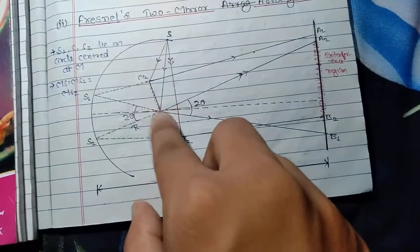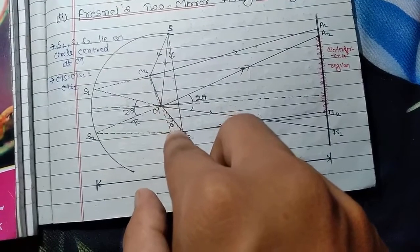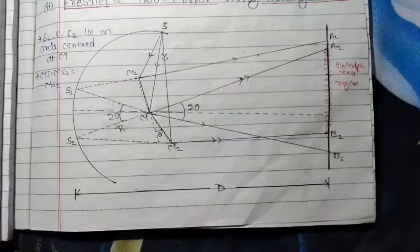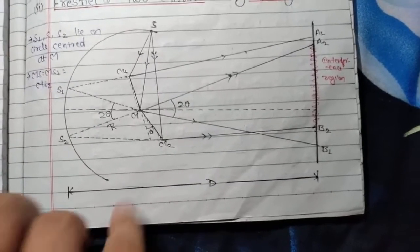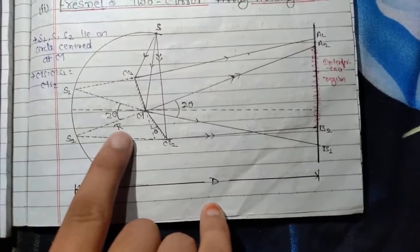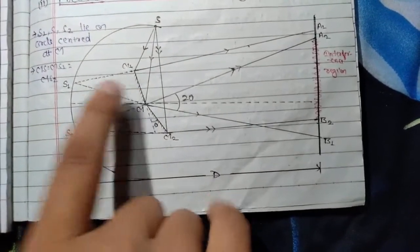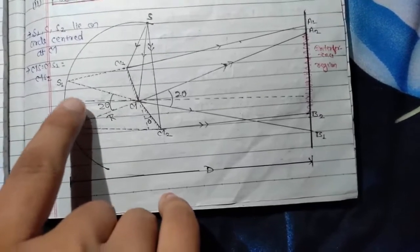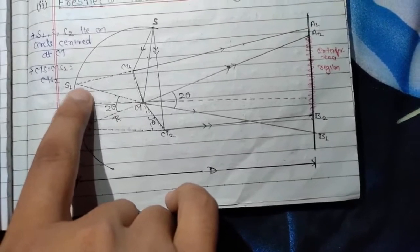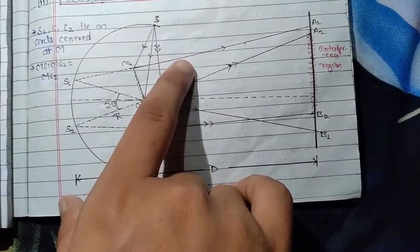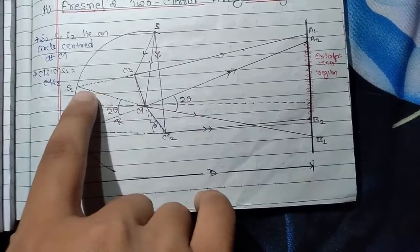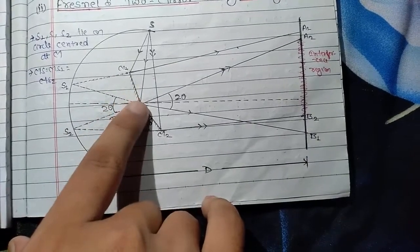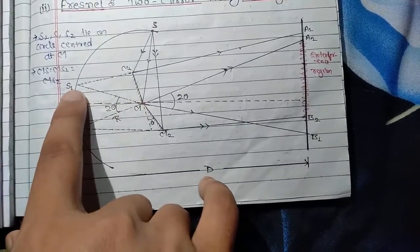Both mirrors are inclined at a very small angle theta. When we retrace the rays reflected from mirror M1, we see that they appear to diverge from S1. When we retrace the path M1-A1, it appears to come from S1. Again, when we retrace the path M2-B1, it also appears to come from S1.